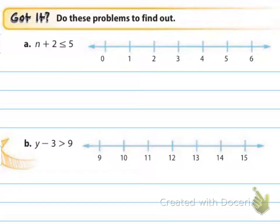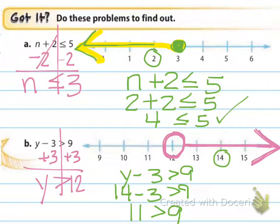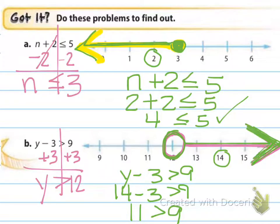Do A and B on your own, then come back for the answers. For A, use a closed circle and check your work by picking a number from the shaded area. For B, there's an open circle because it's not equal to, and an arrow going to the right because it's greater than. If the variable is on the left, the inequality symbol shows you which direction the arrow goes.